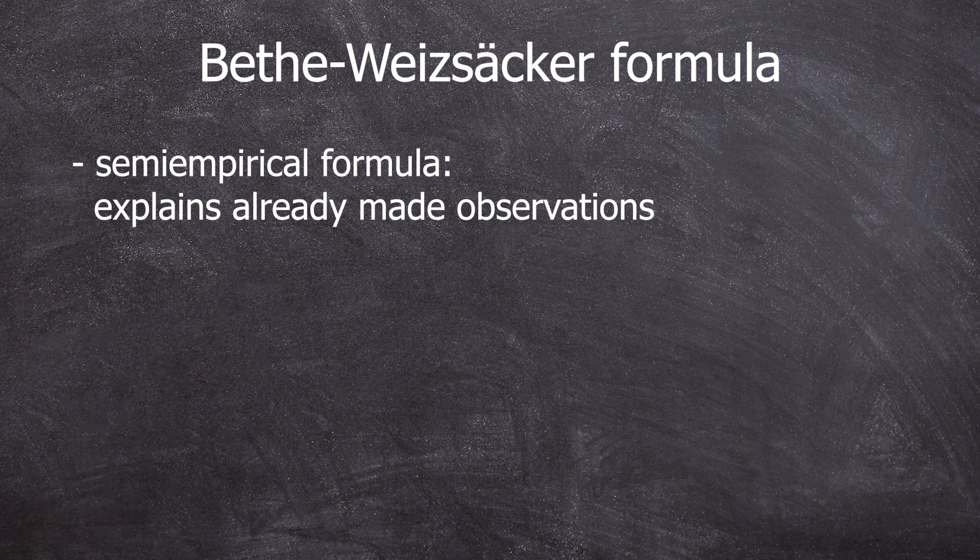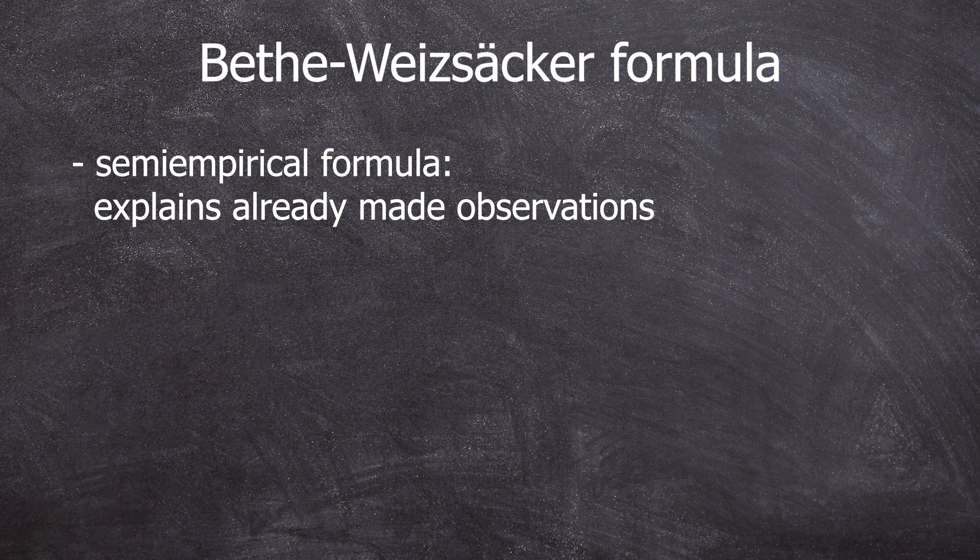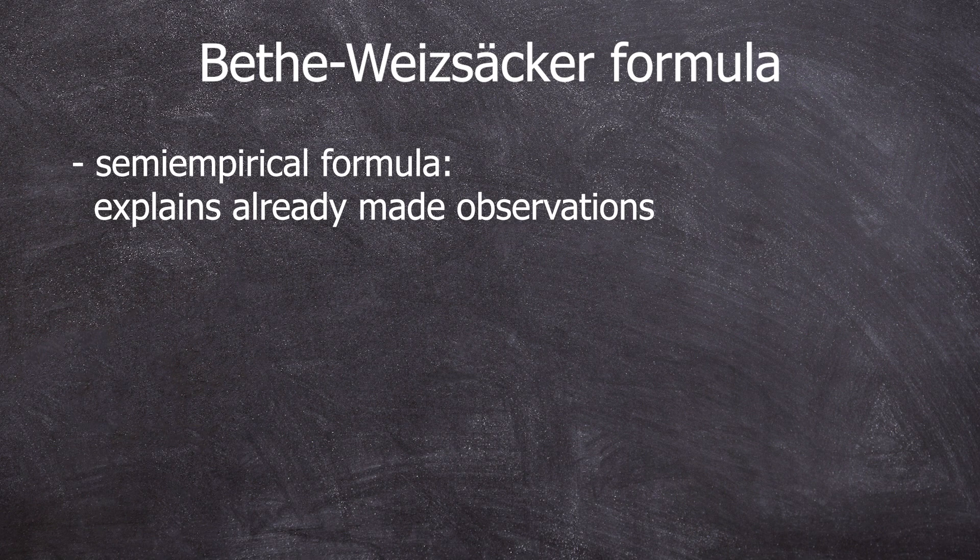Quick overview. The Bethe-Weizsäcker formula is a semi-empirical formula, meaning it cannot predict anything, but it can explain the observations made in 1935 quite well. It utilizes the liquid drop model of the nucleus.